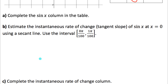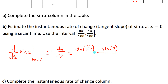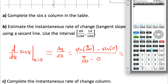We're going to estimate the instantaneous rate of change — the tangent slope — of sine x at x equals zero using a secant line, connecting x equals zero and x equals pi over one hundred. The slope of that secant line will approximate the instantaneous rate of change. Using the slope formula — change in y over change in x — that's sine of pi over 100 minus sine of zero, divided by pi over 100 minus zero. Make sure you're in radian mode.